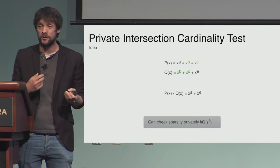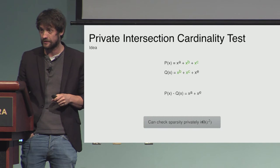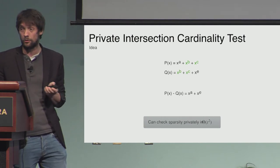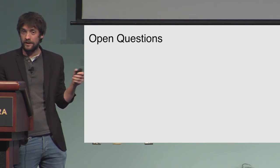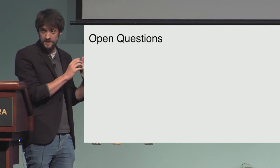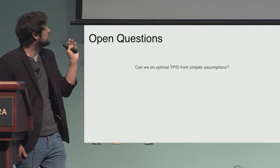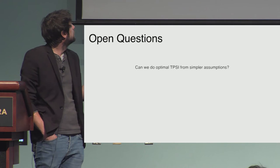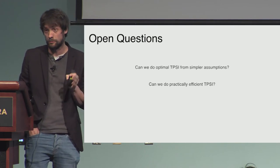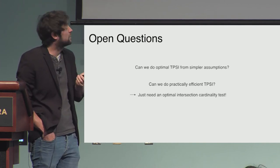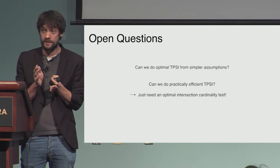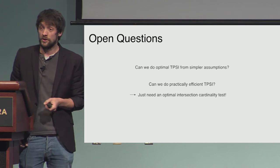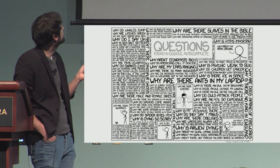You can check whether a polynomial has a certain sparsity with a protocol having squared communication complexity. Combining this with our PSI protocol gives a total protocol with O(t²) communication complexity relying only on additively homomorphic encryption. This work starts to look at threshold PSI with small communication complexity. Open questions include: can we achieve O(t) communication from simpler assumptions, and can any of these be made practically useful? We also show that if you can design a protocol checking whether two sets are similar with optimal communication complexity, our PSI protocol gives a full threshold PSI protocol with optimal communication complexity up to polylog factors.